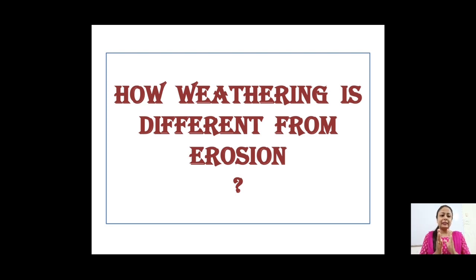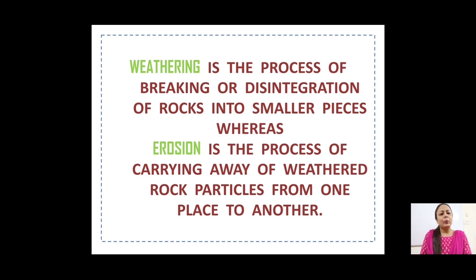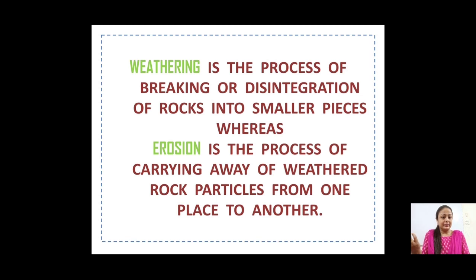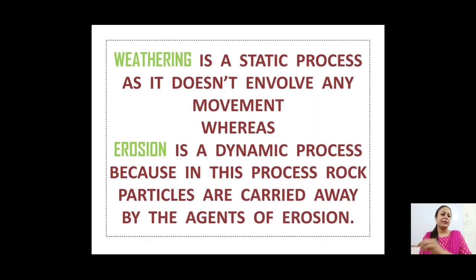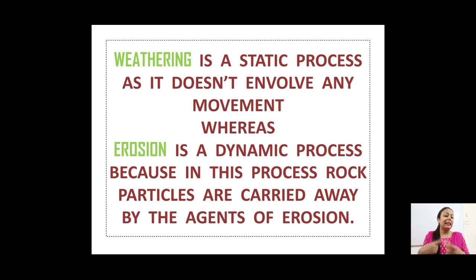The difference between weathering and erosion: weathering is the process of breaking or disintegration of rocks into smaller pieces, whereas erosion is the process of carrying away those weathered particles from one place to another. In weathering, rocks break and stay at the same place — it is static. Erosion is a dynamic process because movement is involved.